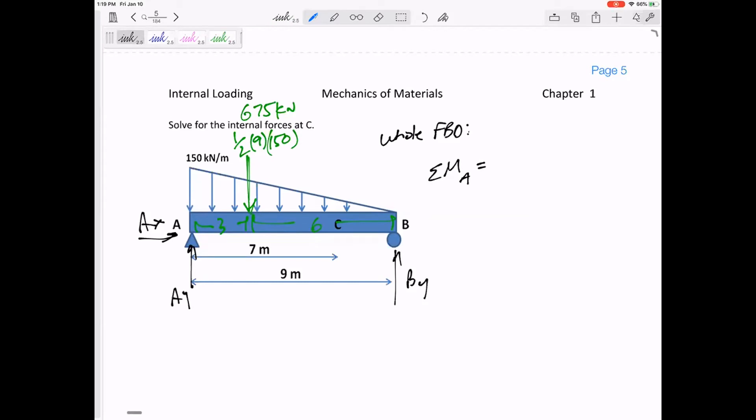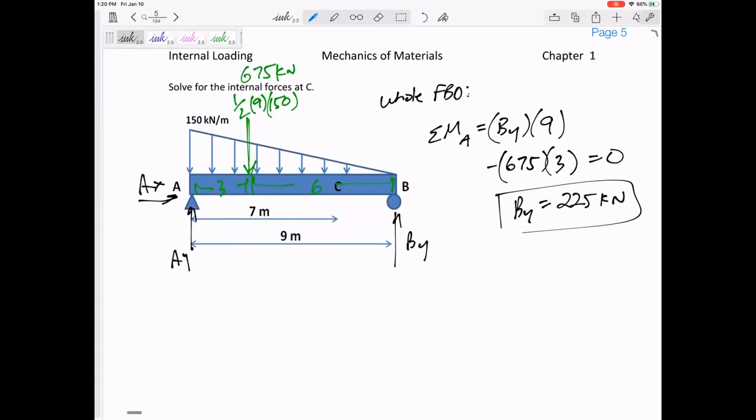So sum of the moments about A would be BY is nine meters away, creating a positive moment. But 675 kilonewtons is three meters away, creating a negative moment. So BY, 225 kilonewtons. And does that make sense? I mean, do y'all know enough about this? If you've got a distributed load that's really like a 675 over here, you know you only need a 225 over there to create the moment equal to zero. It has a longer moment arm. If you get some really large value, you've probably forgotten your moment arm. That's a very common mistake. So anyway, just make sure your answer kind of makes sense. All right, so I've got that BY now. I think I'm ready to cut it.